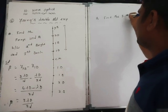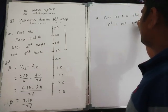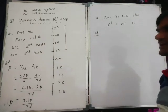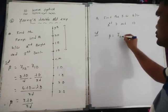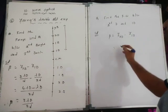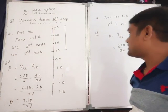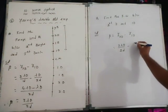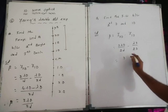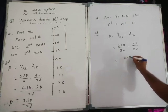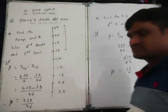Another question: find the fringe width between second dark and first dark. Beta equals y2d minus y1d. y2d equals 3 lambda D by 2d (since 2×2 minus 1 equals 3), and y1d equals lambda D by 2d. So 3 lambda D by 2d minus lambda D by 2d equals 2 lambda D by 2d. The 2d cancels, giving lambda D by d. So the distance between second dark and first dark is the width of the bright fringe, which is lambda D by d.